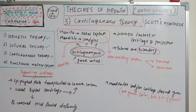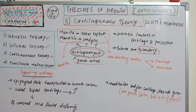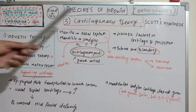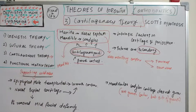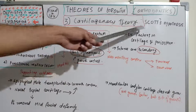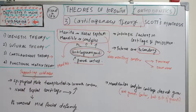Welcome back. Having covered genetic theory and sutural theory, we now turn to cartilaginous theory. This theory was given by Scott and is also known as Scott's hypothesis. It emphasizes the role of cartilage in the growth and development of the head and face region.